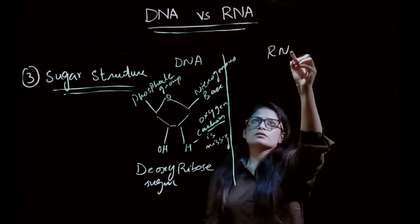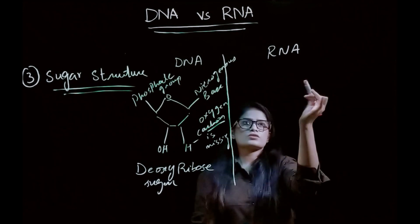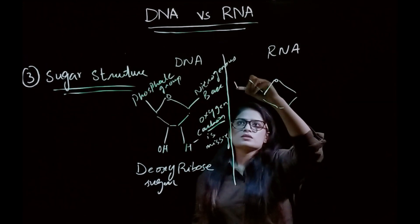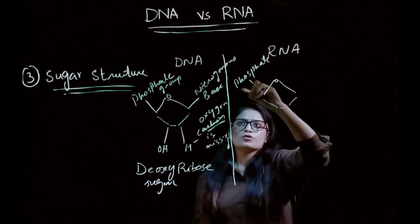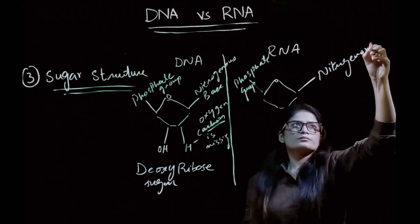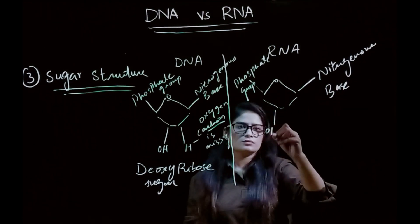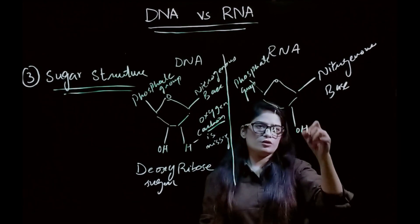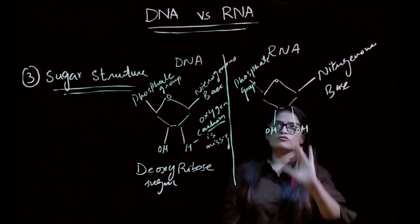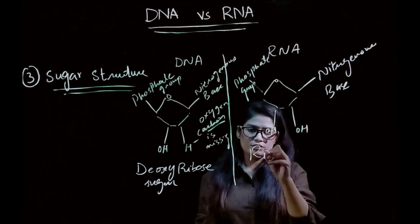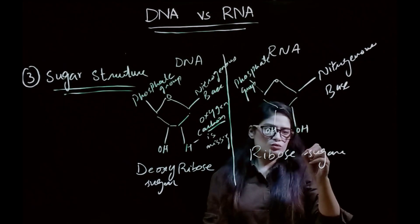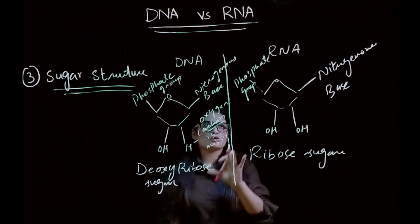In the case of RNA, the sugar structure includes a phosphate group, and at the same carbon position the oxygen is present. So RNA has ribose sugar. While DNA has deoxyribose sugar, RNA has ribose sugar — this is the basic sugar structure difference between DNA and RNA.